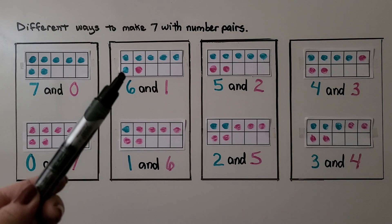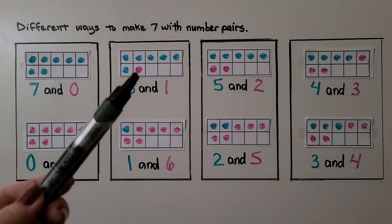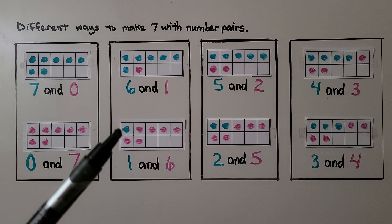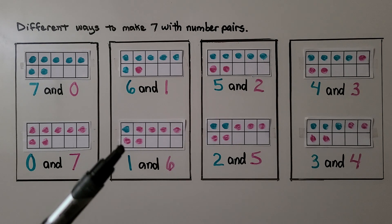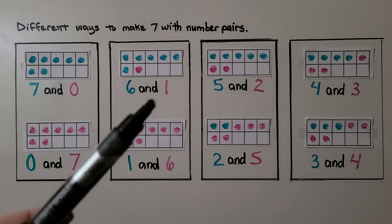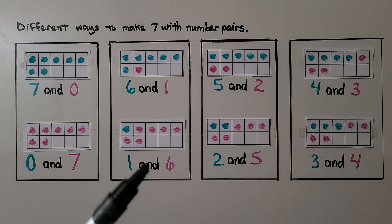We can use 6 blue counters and 1 pink one. Or we can use 1 blue one and 6 pink ones. 6 and 1 or 1 and 6. That makes 7.